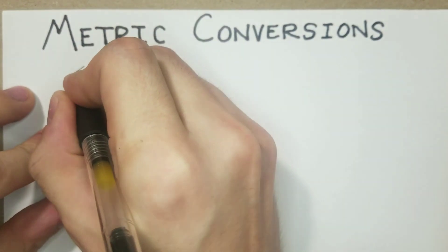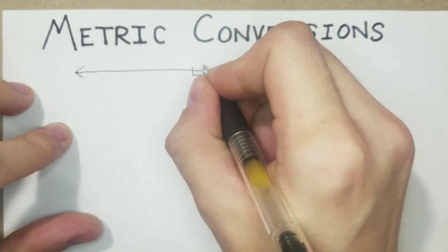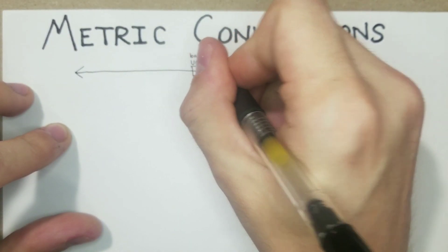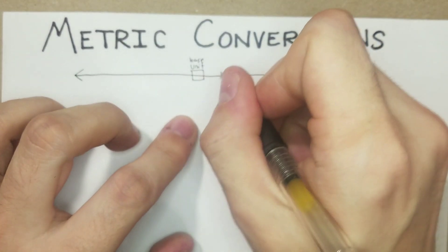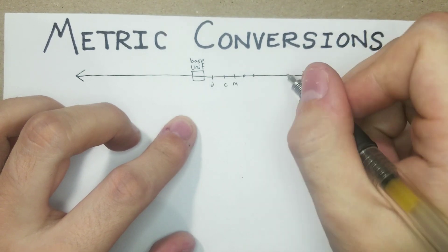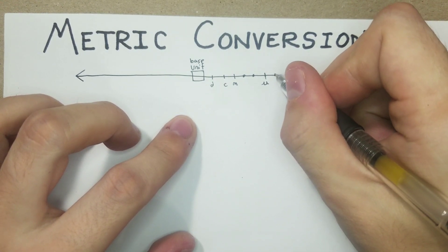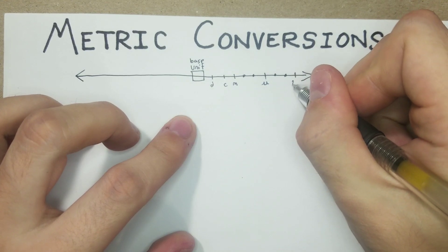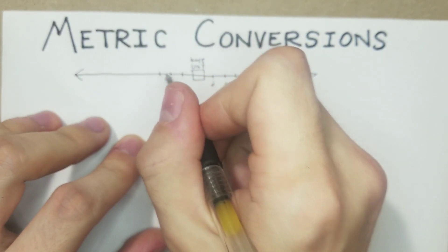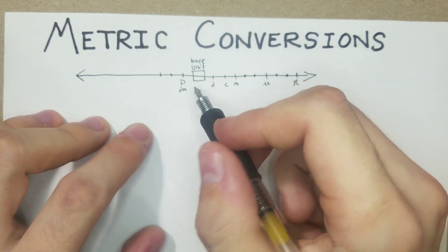The very first thing — it's really important to know this number line. The very middle of the number line is just going to be your base unit. Then you can go whichever way you want. I like to go left to right: deci, centi, milli, then we have micro — which is that funny-looking mu — then nano. Going the other direction you have deca, which is a capital D, or deca lowercase.